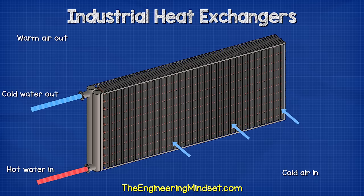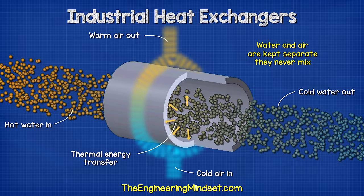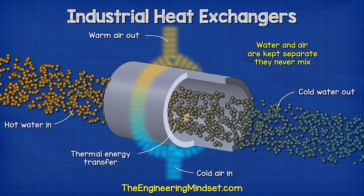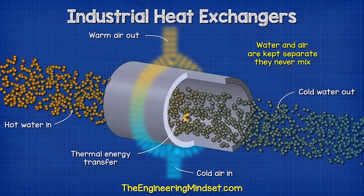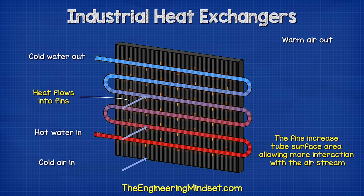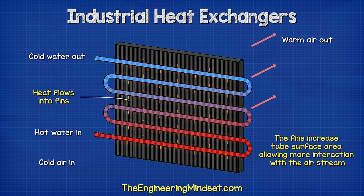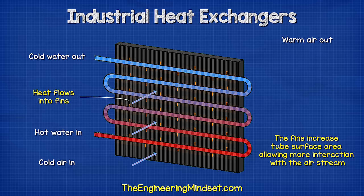The other fluid — for example, ambient air — will pass over the outside of the tube, between the fins. The two fluids will never mix. The heat passes from the hot water through the tube wall and into the air. The fins increase the surface area and allow more interaction with the air stream, which improves the heat transfer.